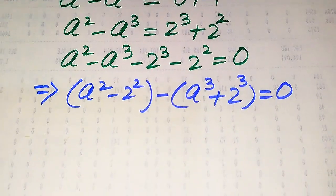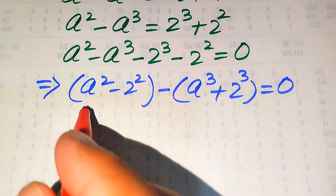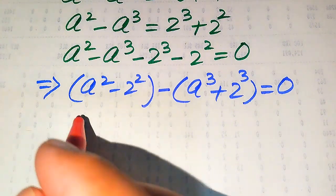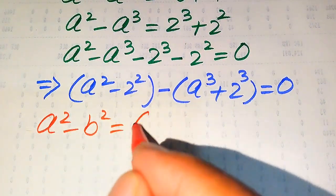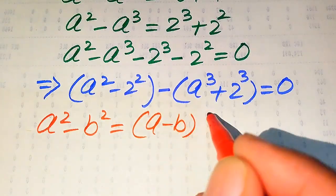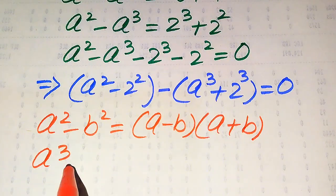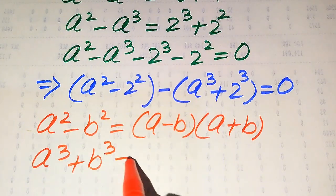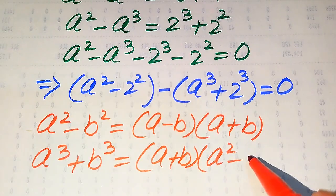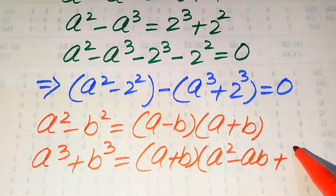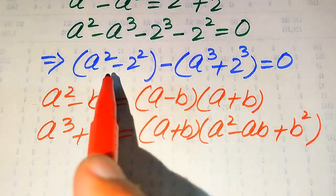We need two formulas to solve this equation. The first is the square identity: a squared minus b squared equals (a minus b)(a plus b). The second is the cubic formula: a cubed plus b cubed equals (a plus b)(a squared minus ab plus b squared).